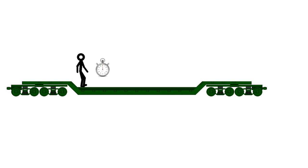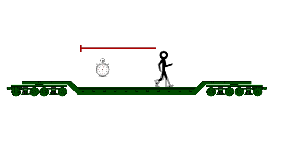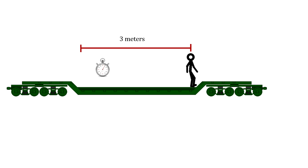We'll use a train example to measure the speed of a person walking on the train, using the same technique we used for the snail. The person on the train sets his clock to zero, marks his starting spot, walks down the car, stops the clock, and marks the second point. We just measure the length of the line and divide by the time. In this example, he went 3 meters in 5 seconds, for a speed of 0.6 meters per second.